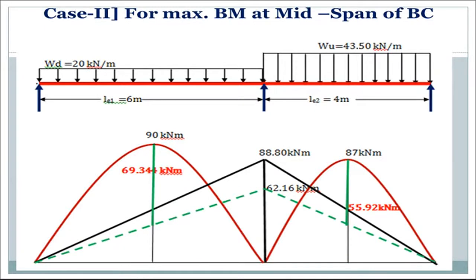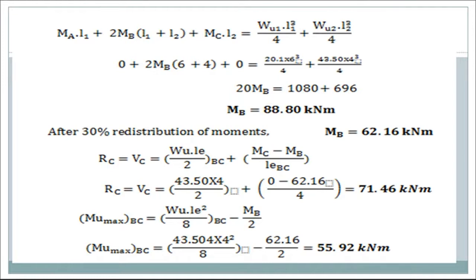For Case 2, we find the maximum bending moment in span BC: design load on BC and minimum load on span AB. We again apply the three-moment theorem to get MB. After 30% redistribution, MB = 62.16 kNm, and we get a positive mid-span bending moment in BC = 55.92 kNm. From Case 2, the maximum design moment in span BC is 55.92 kNm and the maximum shear force at support C is also obtained.